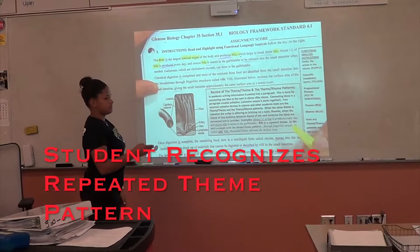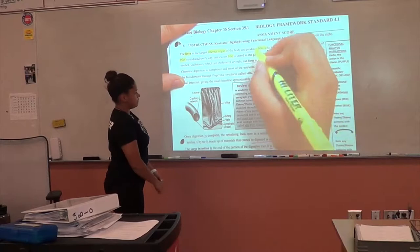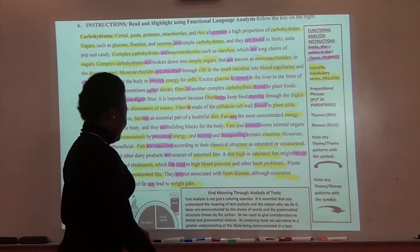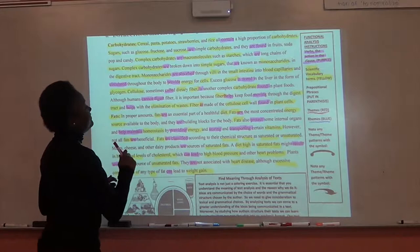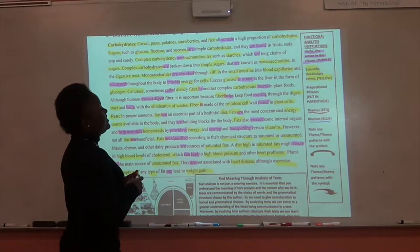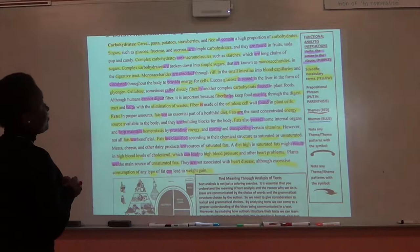In the gallbladder, where it is stored. Look how many words are science vocabulary and verbs. Almost every word has pink or yellow. So after highlighting the verbs and the scientific vocabulary terms, now let's move to the themes and the rhemes. So what's the theme? Someone tell me what's the theme.